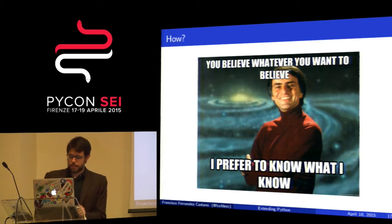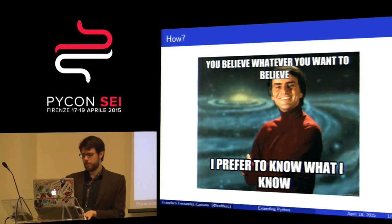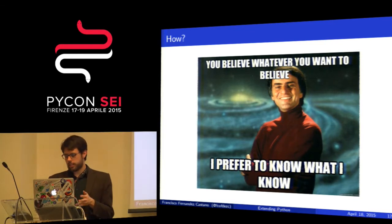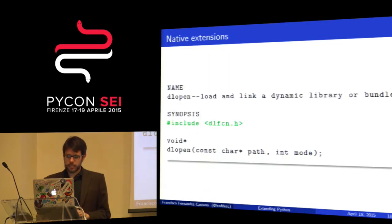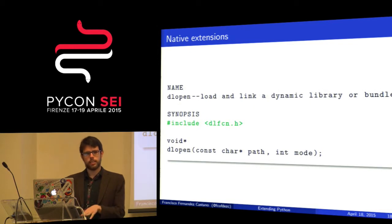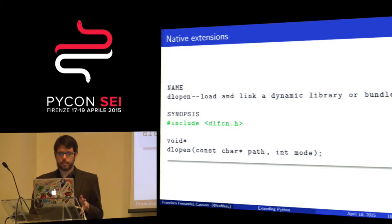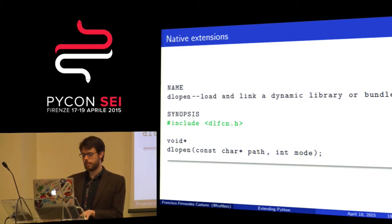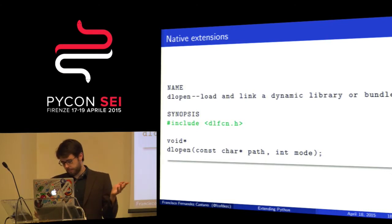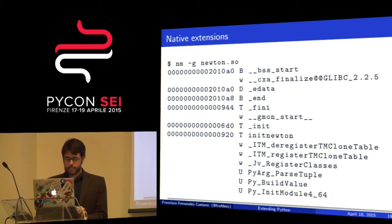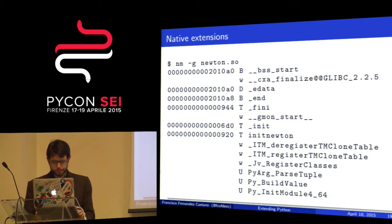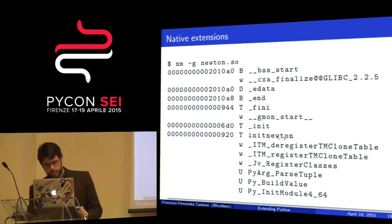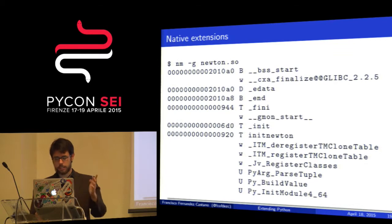I'm a very skeptical person and I really like to know how things work. I was looking at how shared libraries work and I ended up on this man page — dlopen. This is the system call that takes care of loading shared libraries into memory at the operating system level. These are the symbols that are exposed once we compile using this module. Do you remember this init_newton? That is the first method called when a shared library is loaded in CPython.